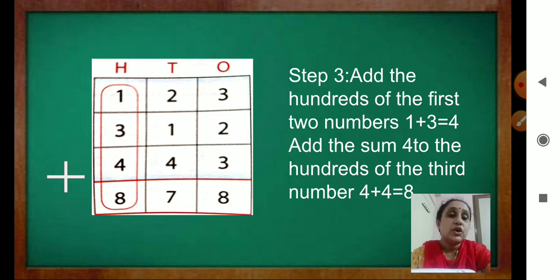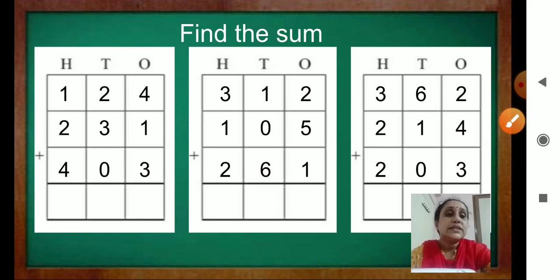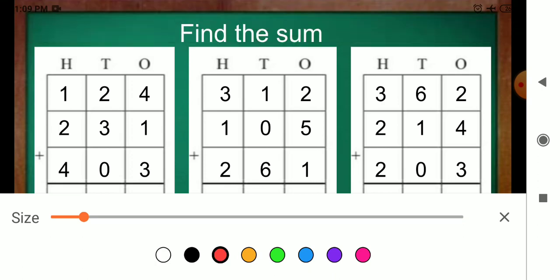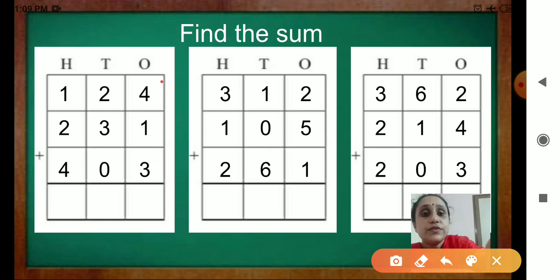Now, together we will solve the sums. Hope you all are ready. With your book and notebook, we will solve together. Now find the sum. Questions are written there — you have to add it. First we will start with the 1s place. So, 124 plus 231 plus 403. We will start from the 1s place. 4 plus 1 — how much? 5. First, you will add these 2 numbers, you will get 5.